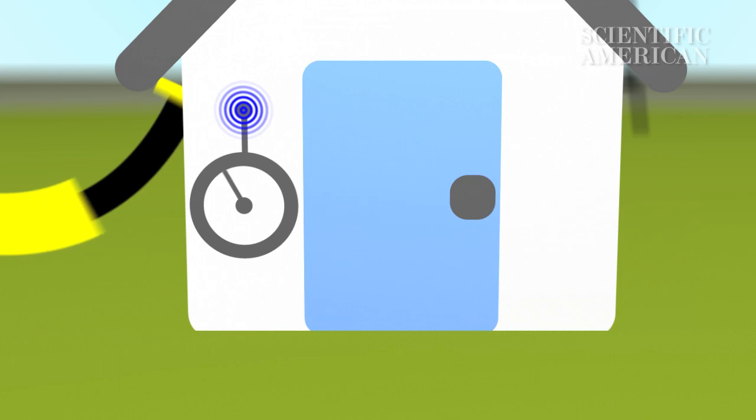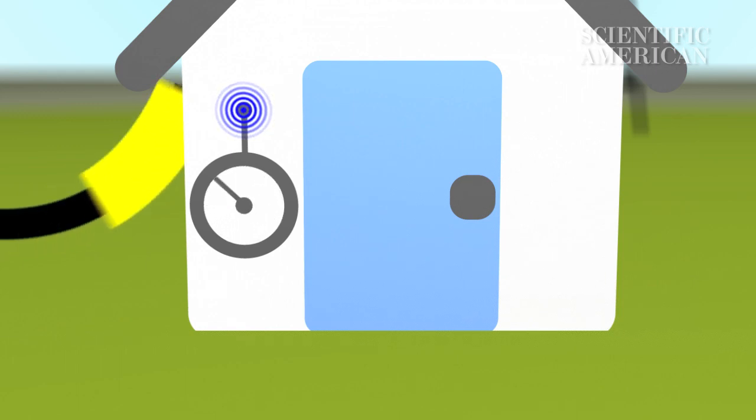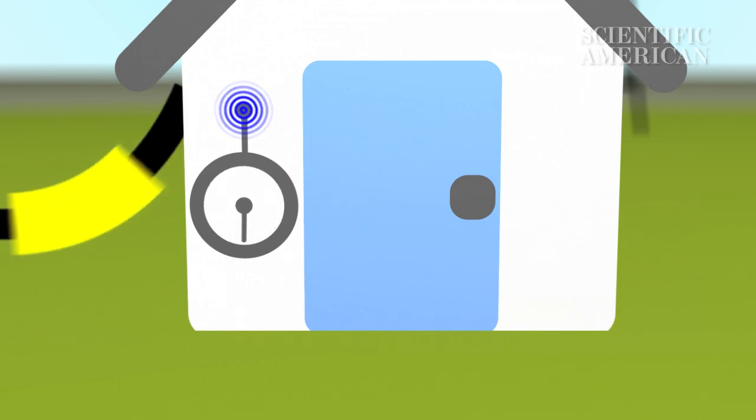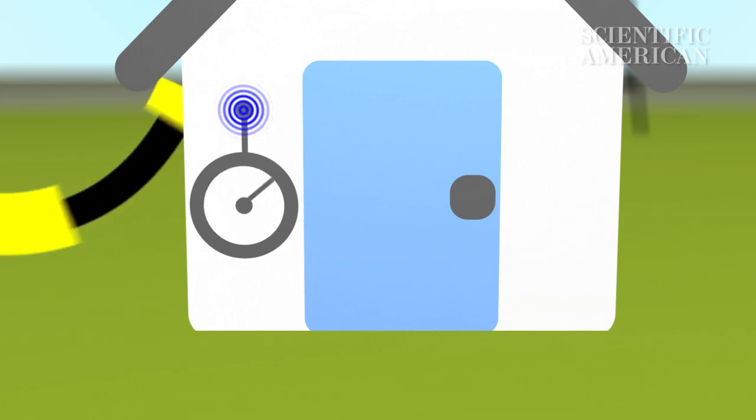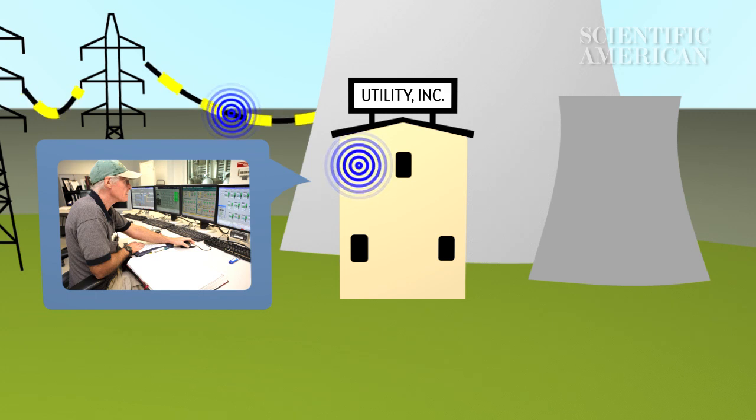Two-way communication will give both utilities and customers better information about who's using what and when. It could even let utilities do things like temporarily turn off a smart appliance in your home to help avert a blackout.